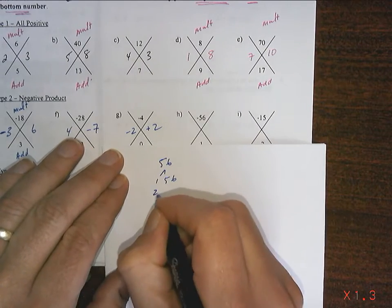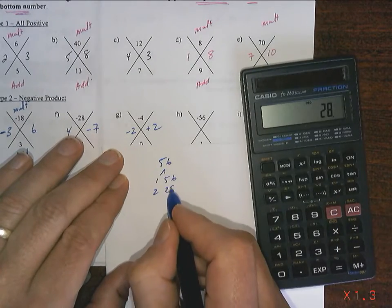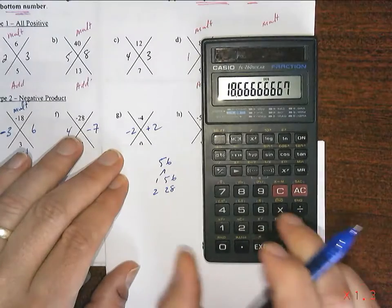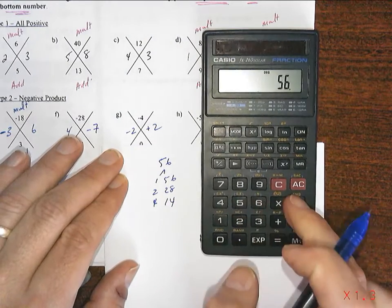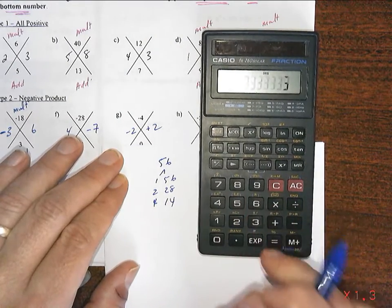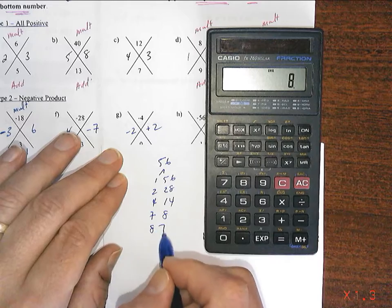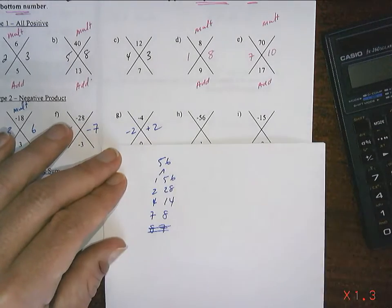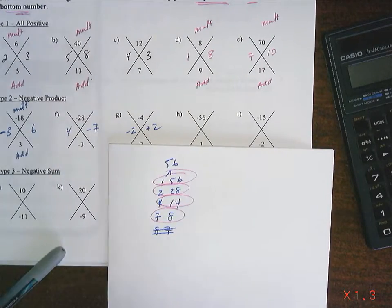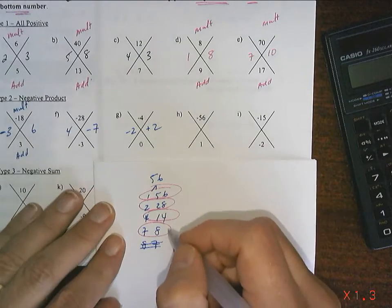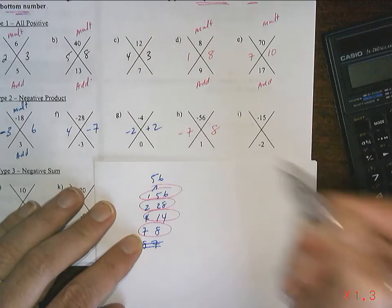1 and 56, 2 and 28, 56 divided by 4 is 14, 56 divided by 7 is 8. And then 8 and 7. It repeated itself. So, I'm done. These are all the pairs of numbers that multiply to give 56 that are whole numbers. They need to add to give 1. So, I'm thinking 7 and 8. And it's going to have to be negative 7 and positive 8.